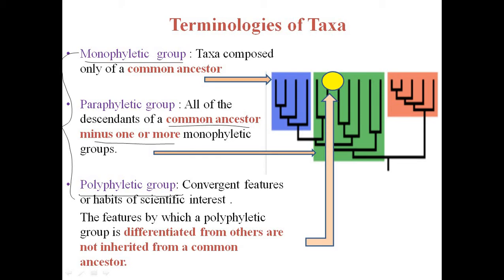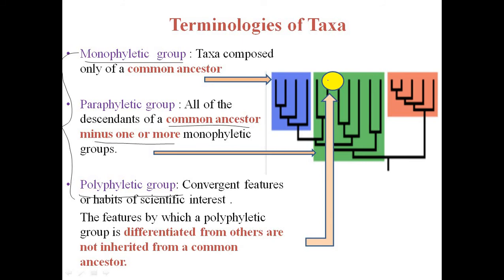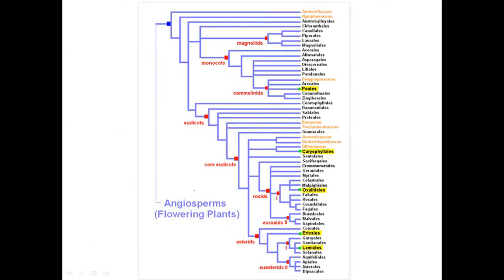The third group is the polyphyletic group, defined by convergent features or habits of scientific interest. The fluorescent yellow-colored circle shows convergent features — traits not inherited from a common ancestor. The two taxa in this circle did not directly evolve from any common ancestor, whether monophyletic or paraphyletic; they show different convergent features.